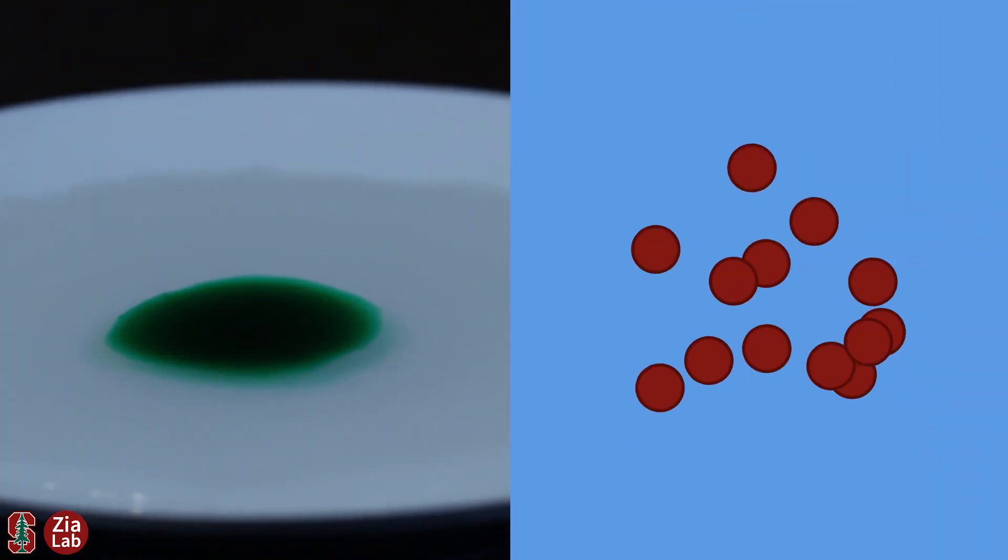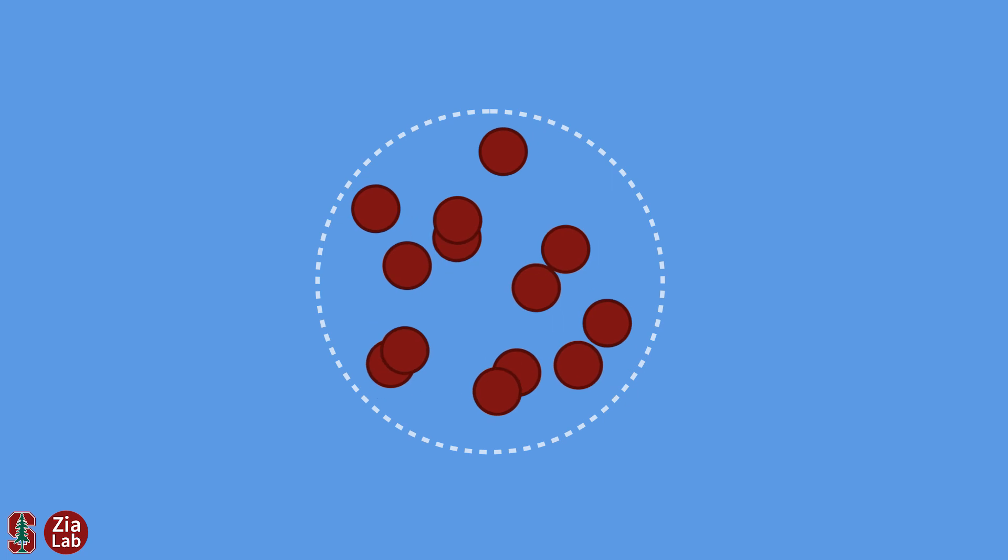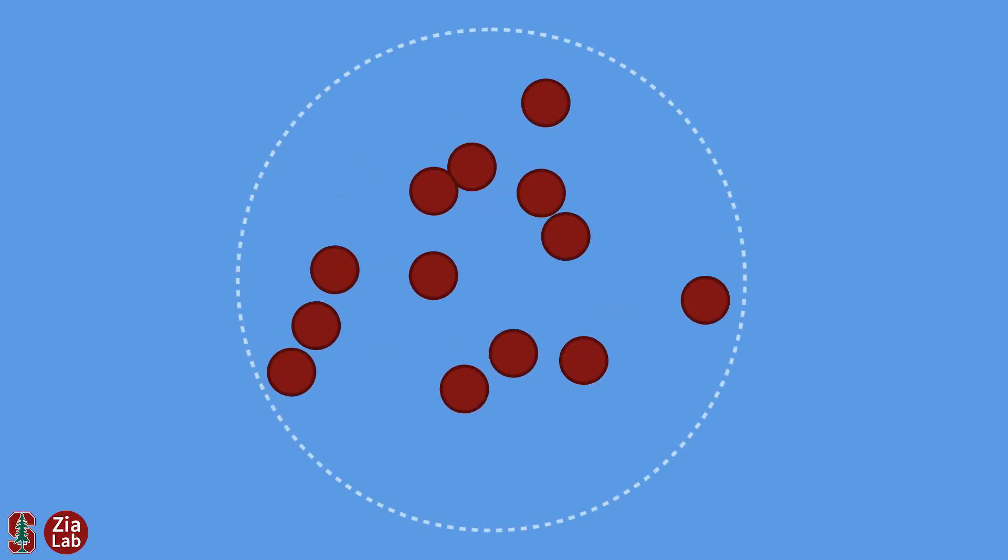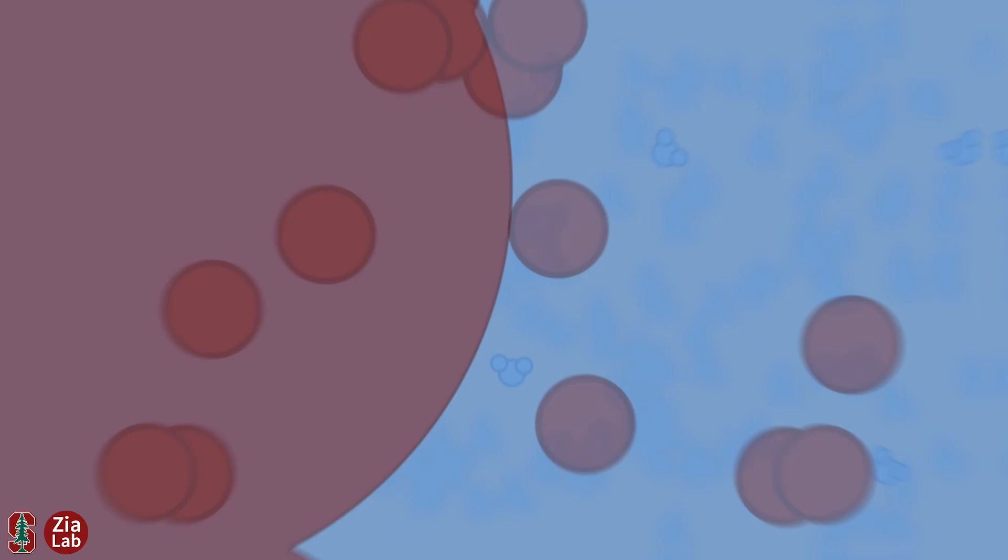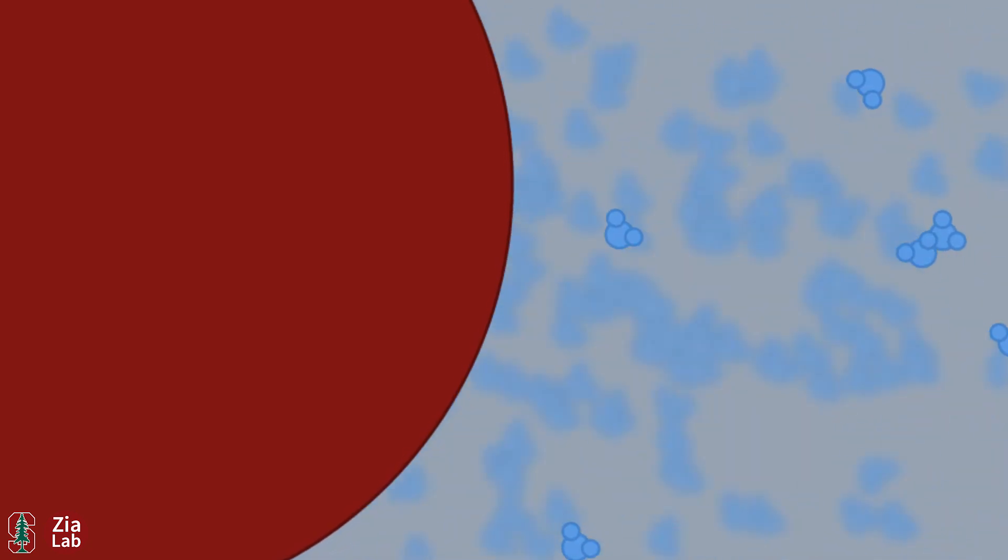Like a drop of food dye, colloids in a liquid will spread to explore the space around them. This random motion of the individual particles arises from collisions with the molecules of the surrounding fluid. This is known as Brownian motion.